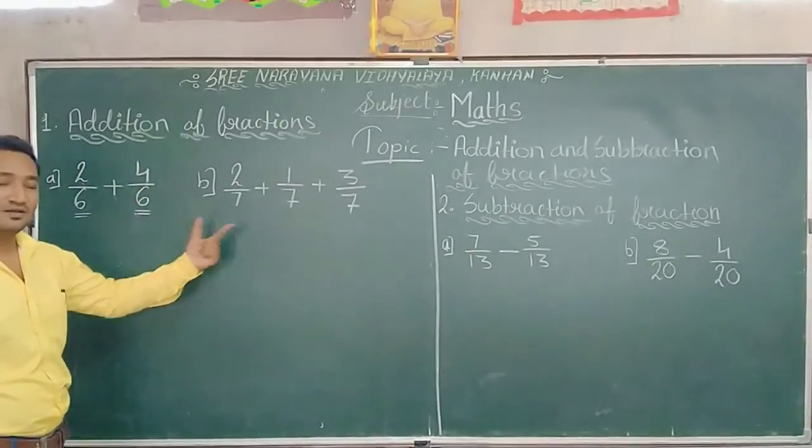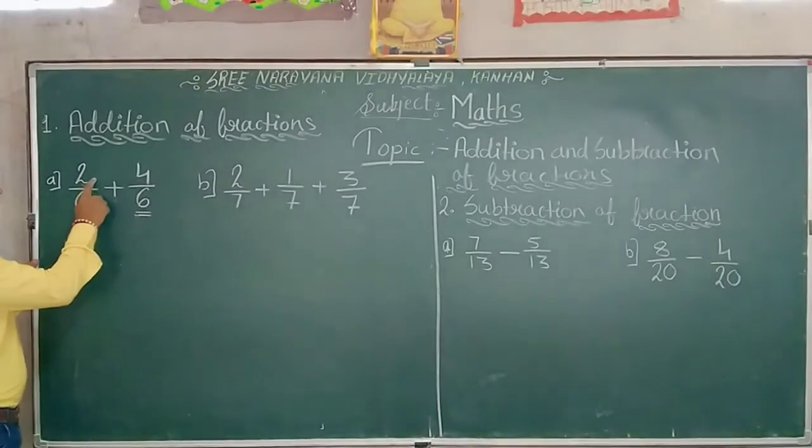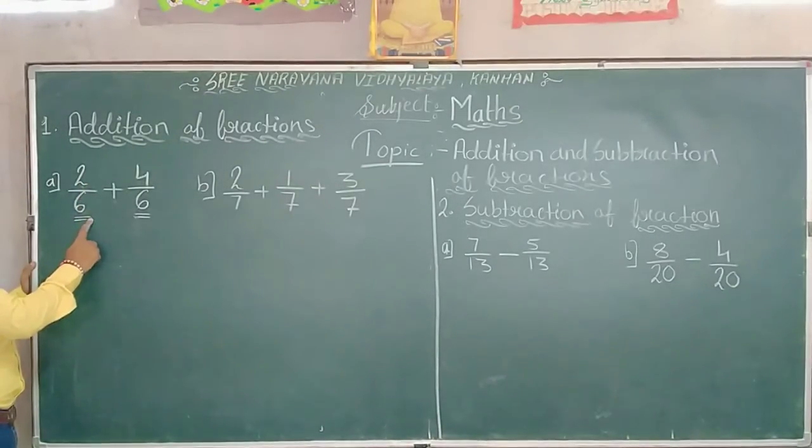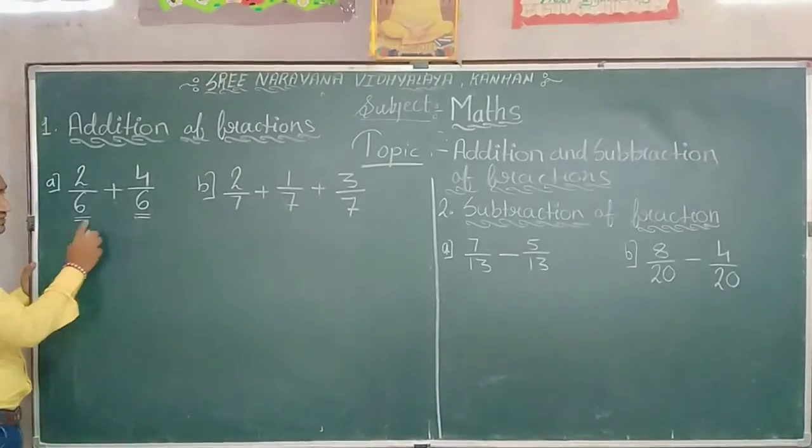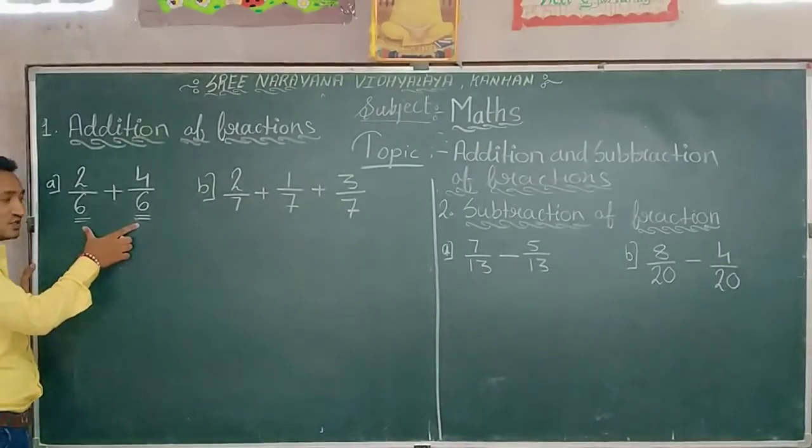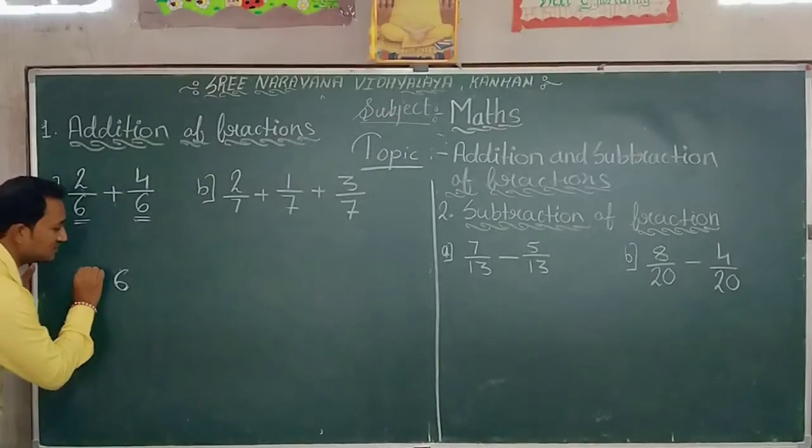Look here how to add. 2 is our numerator and 6 is denominator. Here denominators are equal. In this condition when the denominators are equal we will write the denominator as it is like this.